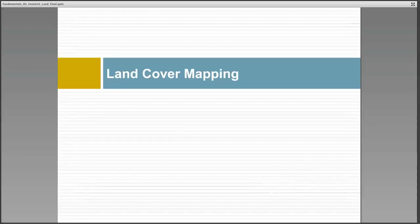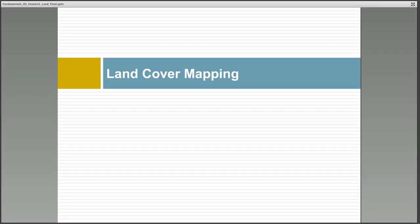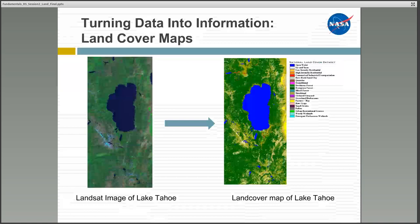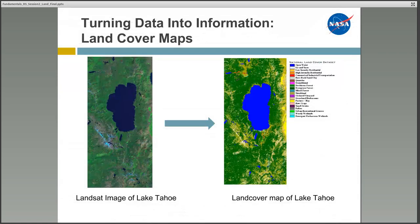I will now hand it over to Cindy, who will discuss land cover mapping with satellite imagery. The process of land cover mapping involves turning satellite data into thematic information about the region. The primary method of doing this is called image classification. On the left is a Landsat image of Lake Tahoe and its surrounding forests; however, the Landsat image cannot tell you whether the lake is actually water or the forest is actually forest. The classified image on the right shows how pixel information in satellite imagery can be transformed into land cover types.